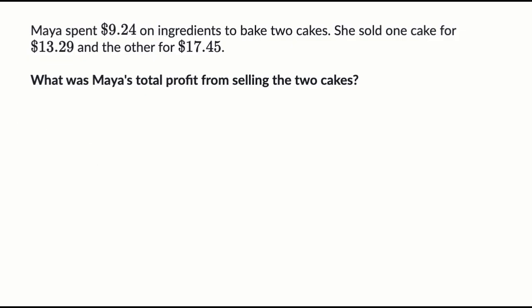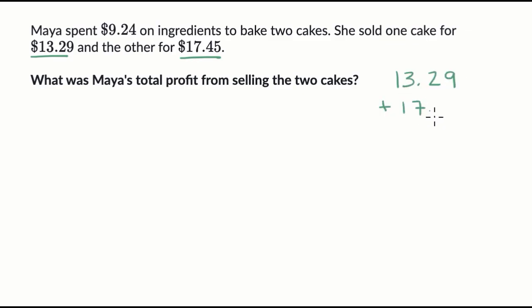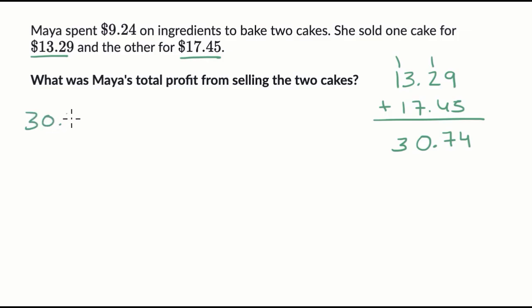Once again, it's money earned minus money spent. The money earned is what she sold the cakes for: $13.29 and $17.45. Adding them together — nine plus five is 14; one plus two plus four is seven; three plus seven is 10, regroup one; one plus one plus one is three — so total money earned is $30.74.